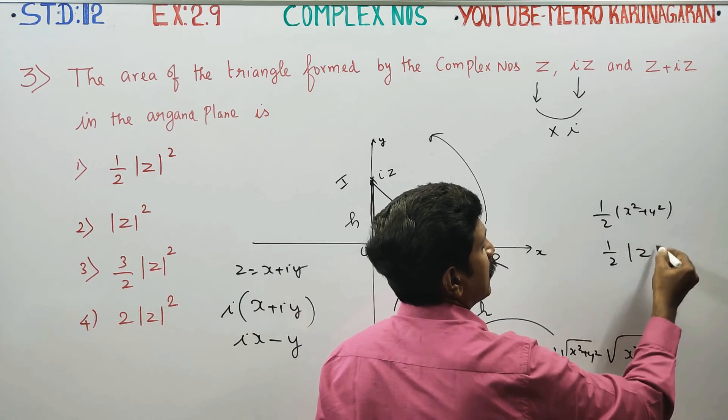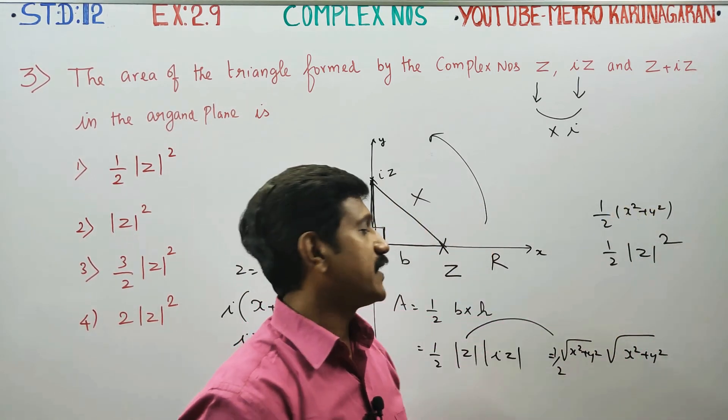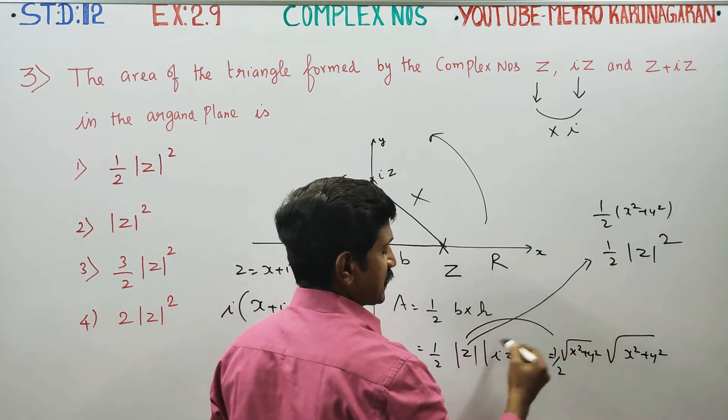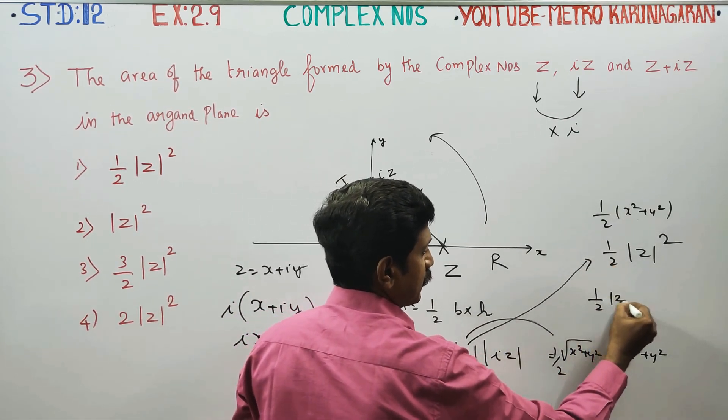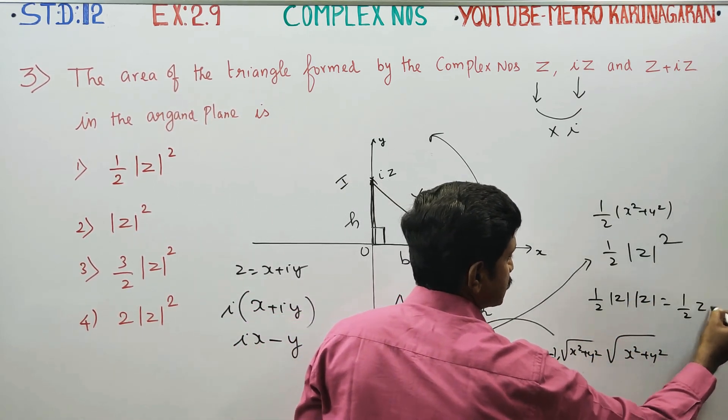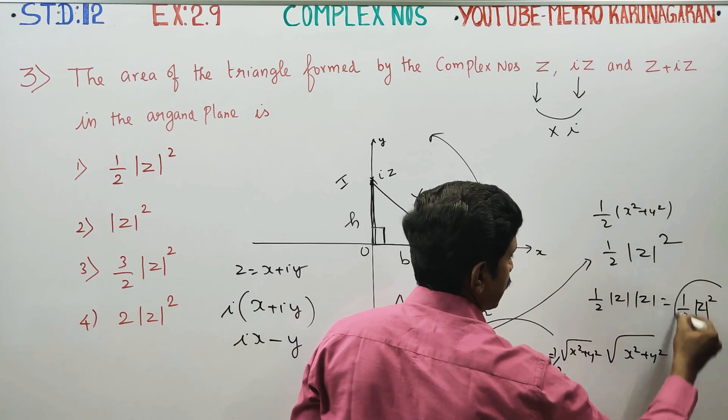That is one of the answer. Z is the whole square answer. The modulus of Z is half, modulus of IZ is also Z, that is half of Z square. This is the answer.